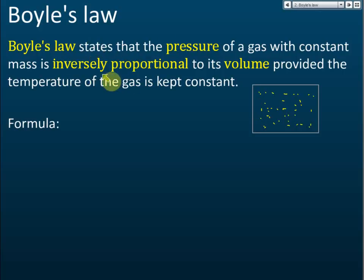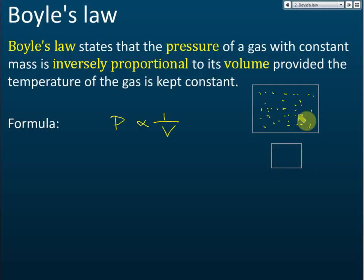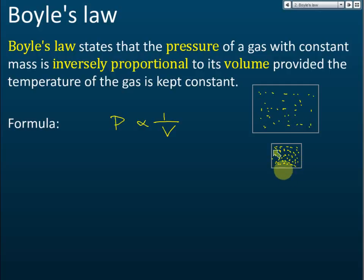The pressure is inversely proportional to the volume. If the amount of gas particles is the same but we compress the gas — we reduce the volume — the amount of gas particles is still the same after compression, but the gas particles are closer to each other. So the smaller the volume, the higher the pressure. If we compress the gas, the pressure will increase. The pressure is inversely proportional to the volume.